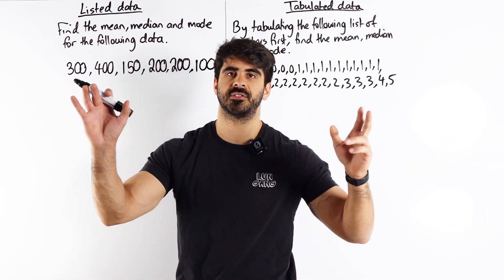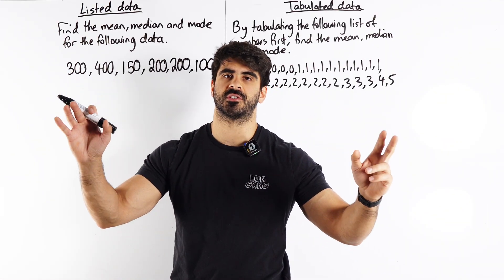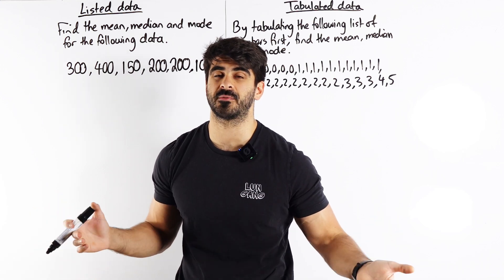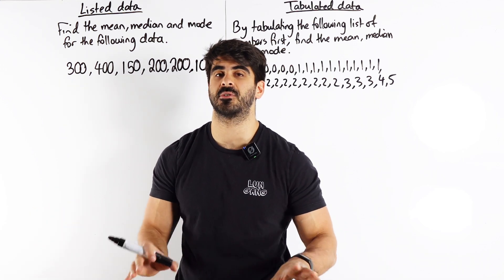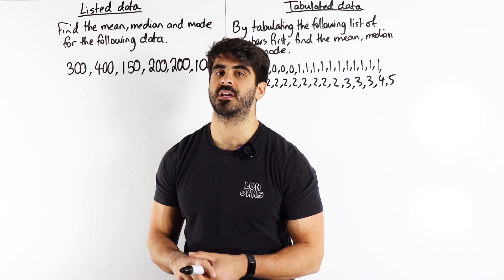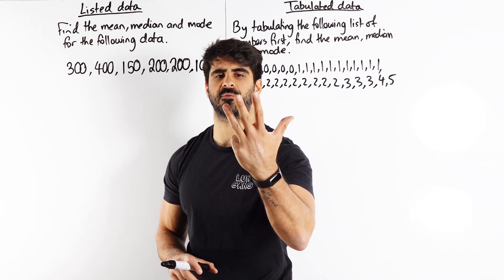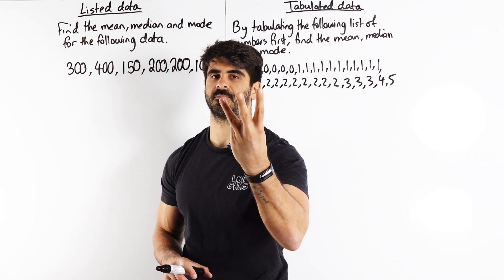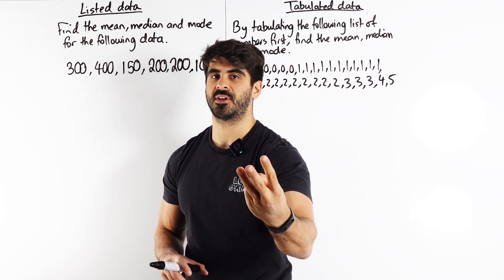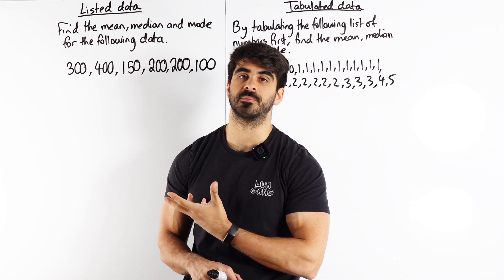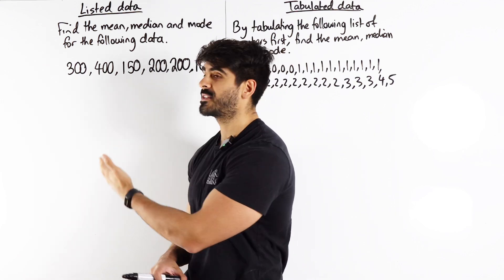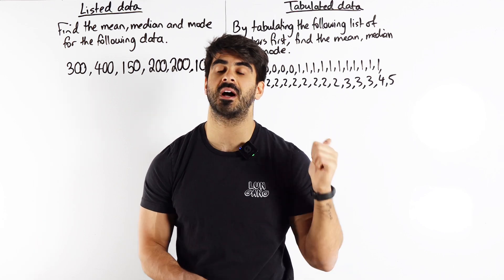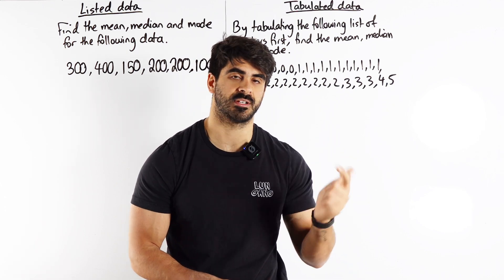Discrete data and averages. These are very common at GCSE and always worth three to five marks depending on how much they ask per question. We're going to go through the three types of average — mean, median, and mode. They all serve a purpose but we need to know how to calculate all of them given listed data, and we're also going to look at tabulated data and why we need to have tables.